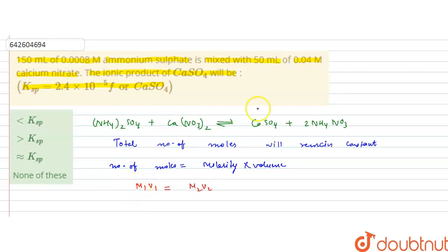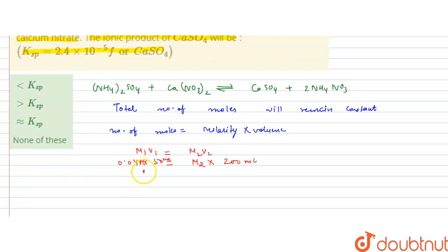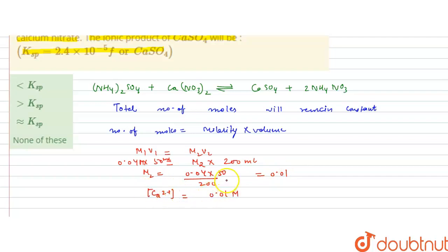The initial concentration of calcium 2+ — the calcium salt is given as 0.04 molar — and the initial volume is 50 ml. The final concentration we have to calculate, and the final volume will be 150 ml plus 50 ml, that is 200 ml. So, M₂ concentration will be 0.04 × 50 divided by 200, which gives us 0.01 molar. This is the final concentration of the Ca²⁺ ion — 0.01 molar.